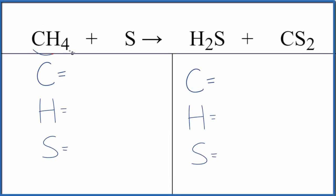Let's balance the equation for CH4 plus S gives us H2S plus CS2. This is methane here. We have sulfur, then we have hydrogen sulfide and carbon disulfide.